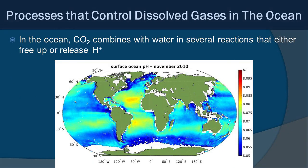As a result, the ocean maintains a pH of around 8 to 8.1, because CO2 combines with water in reactions that either free up or release hydrogen ions. A surface ocean pH map from November 2010 shows that from pole to pole, coast to coast, the highest pH is around 8.1 and the lowest is about 8.05 — it all stays relatively stable.